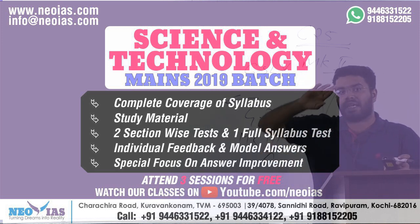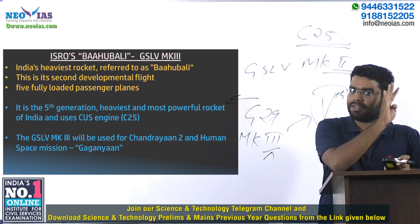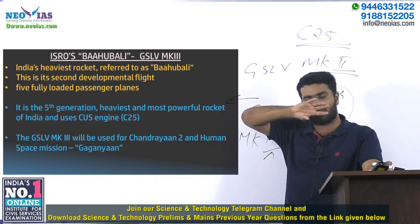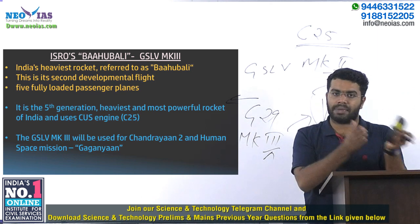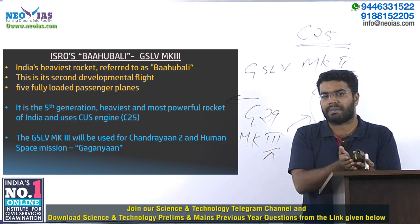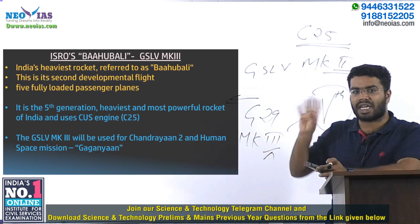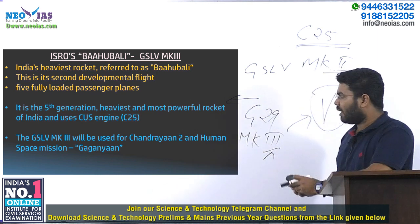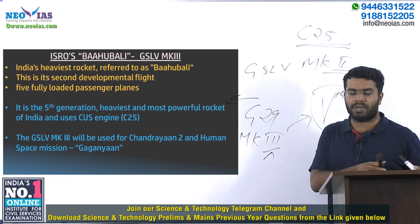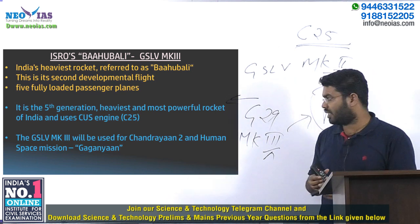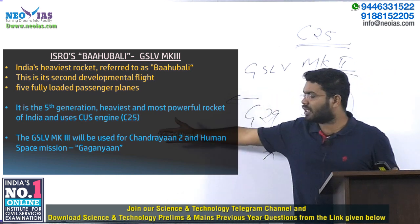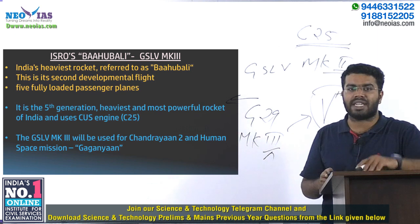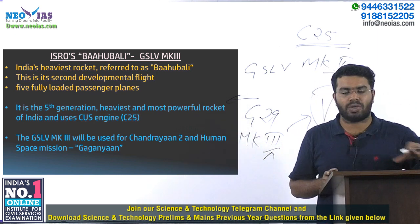GSLV Mark III uses a cryogenic upper engine in its third stage — remember GSLV has three stages while PSLV has four. The third stage uses a cryogenic engine where both propellant and oxidizer are stored at very low sub-zero temperatures in liquid form. The name of this cryogenic engine for Mark III is C-25. Mark III will again be used for Chandrayaan-2 and for the Gaganyaan human space mission of India.